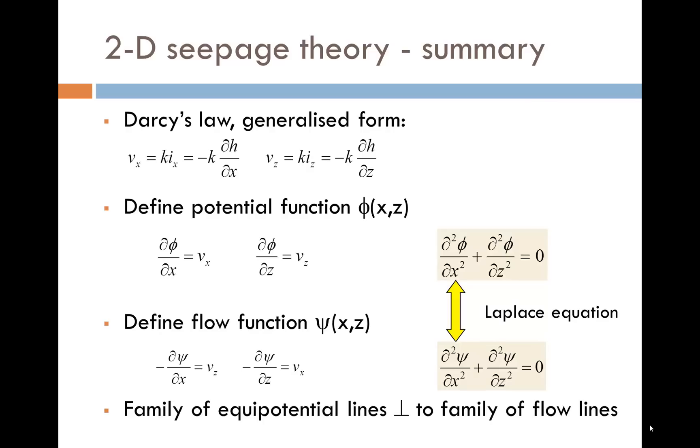The values of vx and vz can be written in terms of the permeability and hydraulic gradient using Darcy's law as shown. We now define two new functions, a potential function phi and a flow function psi, both of which are a function of x and z.